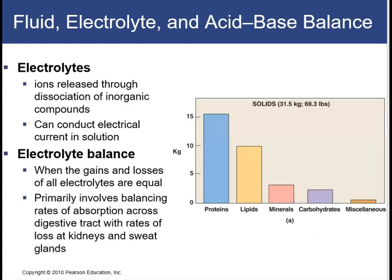We will also be looking at electrolyte balance. Electrolytes are ions that are released through the dissociation of different inorganic compounds. They are called electrolytes because they have the ability to conduct an electrical current in solution. With electrolyte balance, as with water balance, there is a state where gains and losses of all electrolytes are equal. This primarily involves balancing the rate of absorption of these electrolytes across the digestive tract and the rate of loss through the kidneys and through our sweat glands.